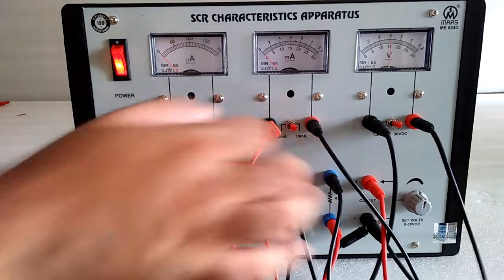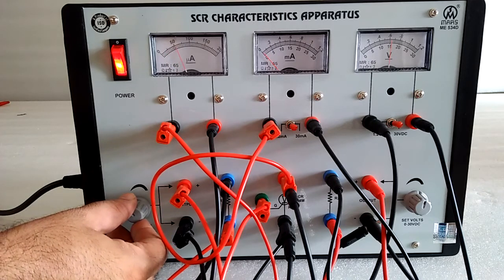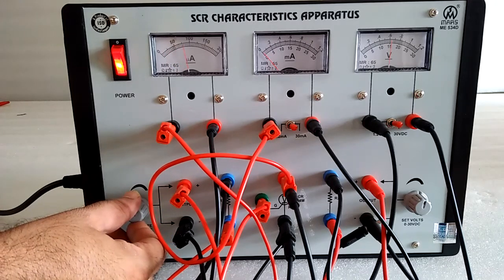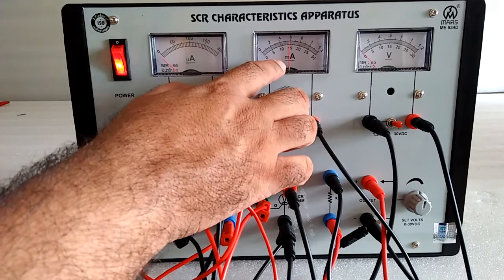Now change the current meter. Apply the gate current. At particular gate current, SCR will trigger. We got the triggering point.